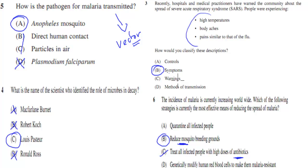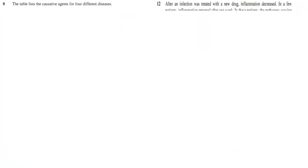These are all symptoms — remember, symptoms are signs of the disease. The next questions: a table lists causative agents for four diseases — influenza (virus), Creutzfeldt-Jakob disease (prion), ringworm (fungi), and food poisoning (bacteria). Which disease would treatment with antibiotics be most appropriate? A. Influenza. B. Creutzfeldt-Jakob disease. C. Ringworm. D. Food poisoning.